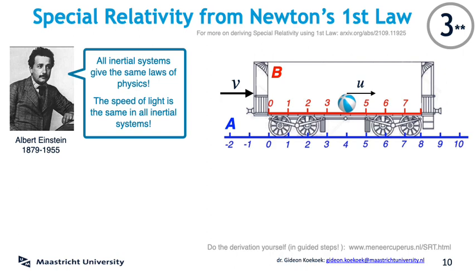It sounds pretty astounding to claim that special relativity can be derived from inertial frames alone, because we always hear that special relativity comes from insights about light. But at the end of the day, relativity is a theory about space and time, not about what is moving in space and time, be it light or something else. This is why it also applies to physics where light plays no role, and it is also why we can expect that special relativity can be derived without using any light. I will go through the qualitative derivation but will leave the mathematical steps aside. For those who would like to see these steps, please view side video 3, where I go through all of them. You can also read the scientific article that two colleagues and myself wrote about it in the link at the top of this slide.